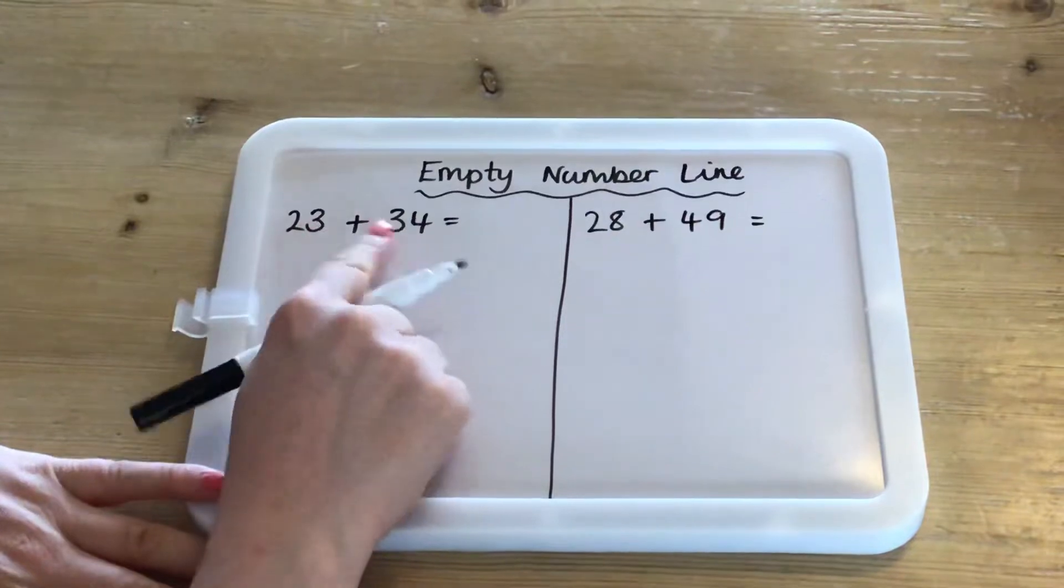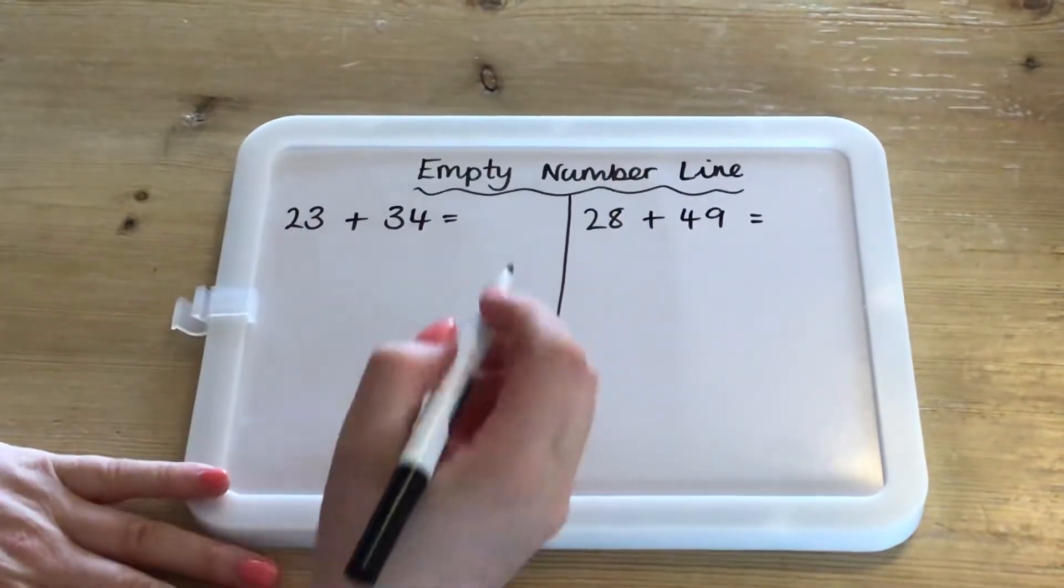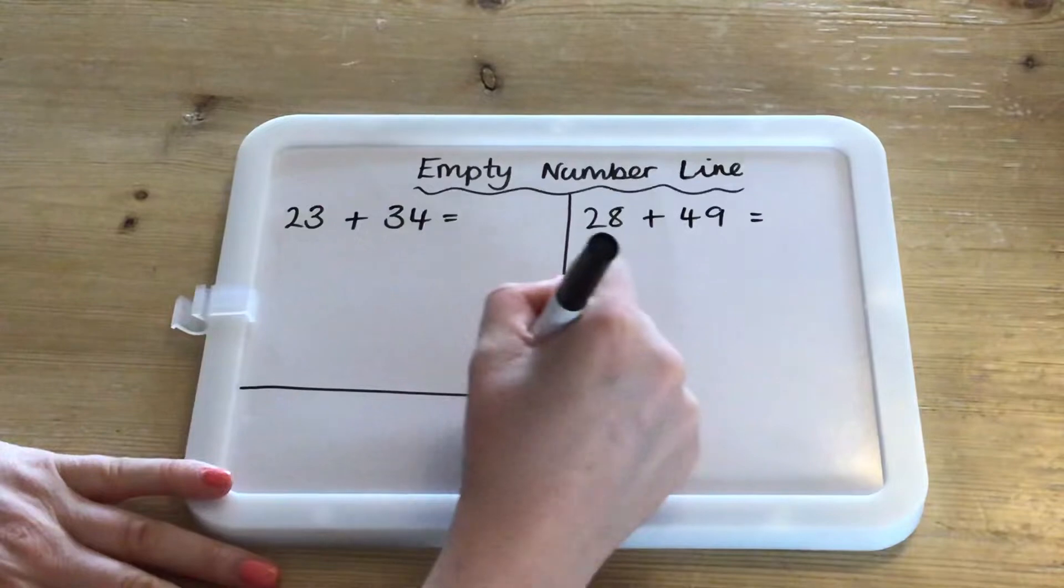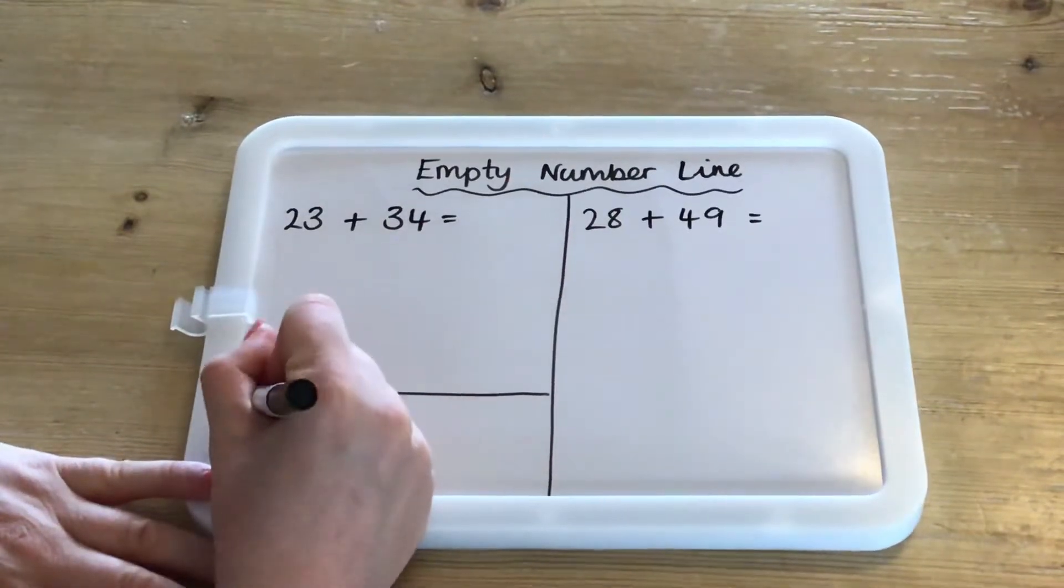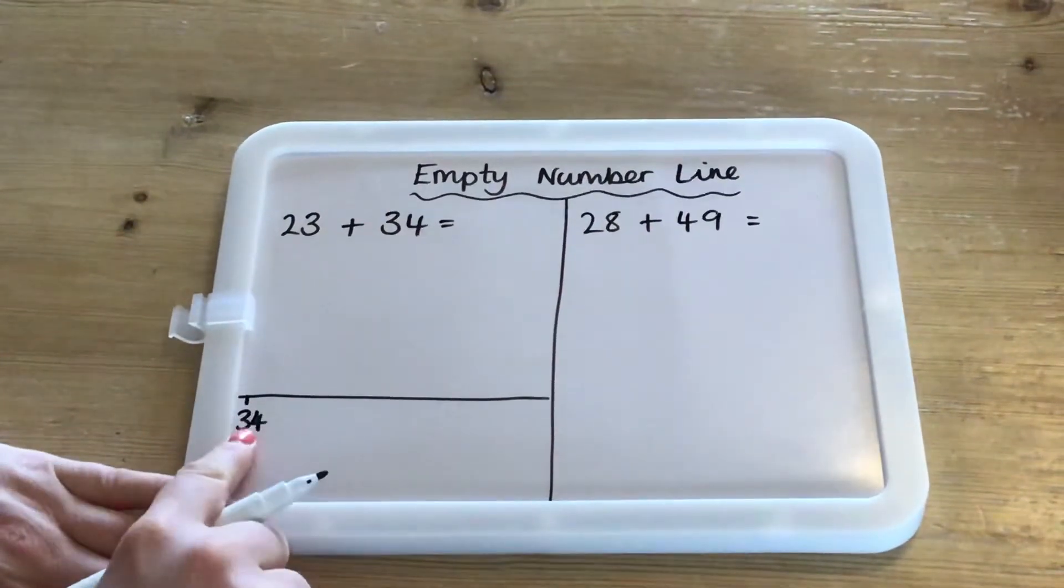You need to have a look at your two numbers and decide which one is the biggest. You're going to draw your empty number line and put your biggest number at the front of the number line.